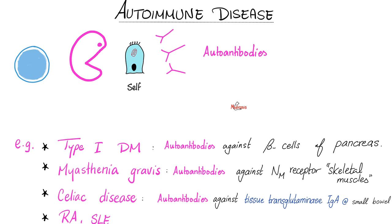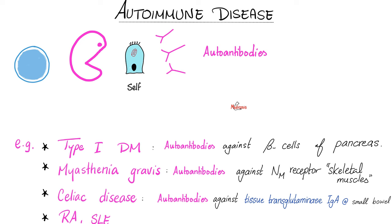If those mechanisms fail, your immune system attacks your own cells, creating autoantibodies — this is called autoimmune disease. Examples include type 1 diabetes, where antibodies attack the beta cells of the pancreas that make insulin; myasthenia gravis, where antibodies attack the nicotinic sub-M receptor on skeletal muscle, causing weakness; celiac disease with autoantibodies against tissue transglutaminase IgA in the small intestine; and rheumatoid arthritis, lupus, and others.